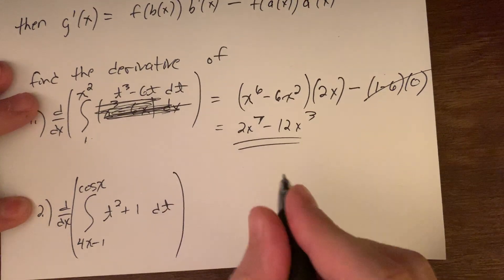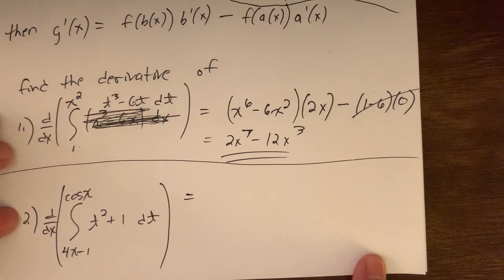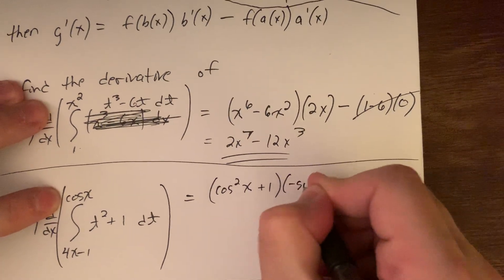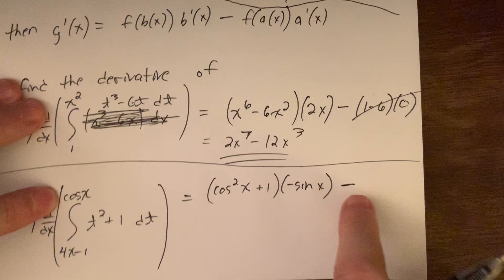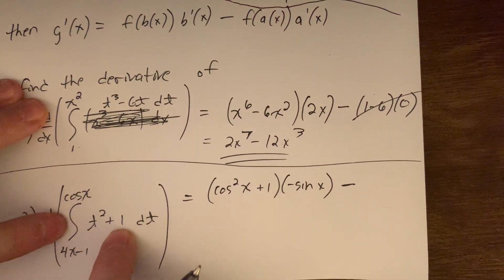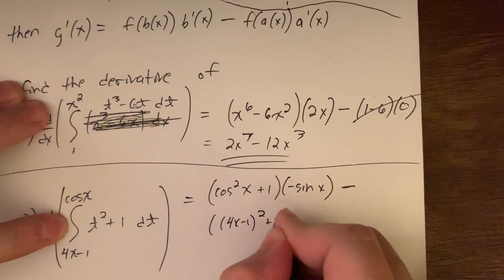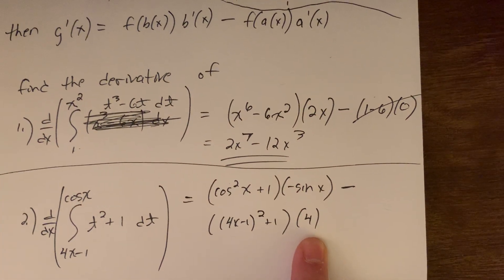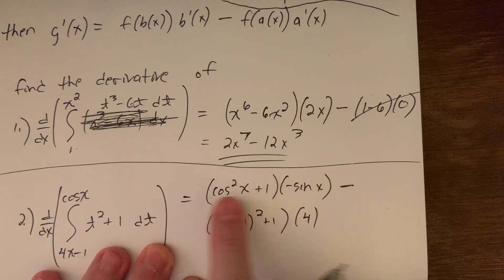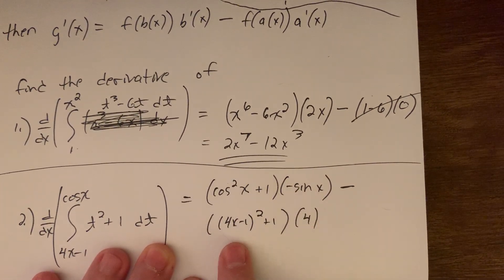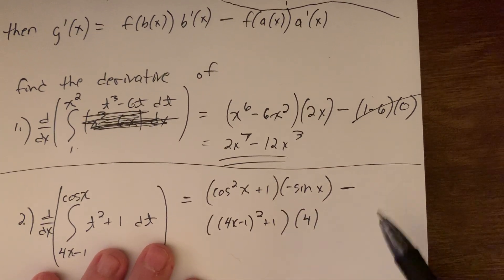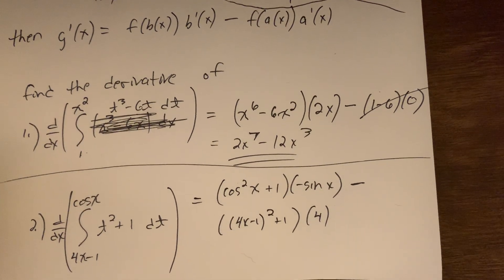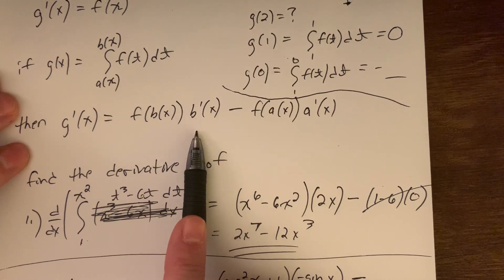For Problem 2, same idea. Plug in the top function: cosine squared x plus 1, all times the derivative of cosine, which is negative sine x. Minus: the bottom expression gives 4x minus 1 squared plus 1, all times the derivative of 4x minus 1, which is just times 4. You could distribute further, but that requires FOIL, so this is a good answer. Even though this looked like a pretty ugly function, it still worked out nicely as a straightforward application of FTC Part 1.